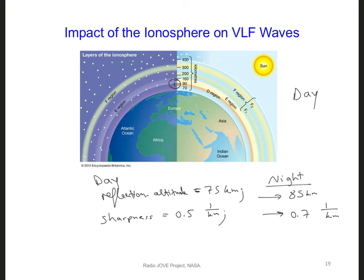Since the nighttime reflection altitude is higher at 85 kilometers, we have a problem: the top of our grid currently ends at an altitude of 78 kilometers. That would be where k-max is, and k equals 1 is where the ground is. So we need to raise the top of our model, because right now we're only modeling up to 78 kilometers.